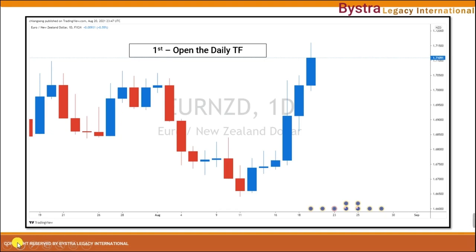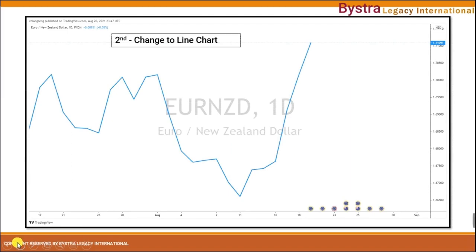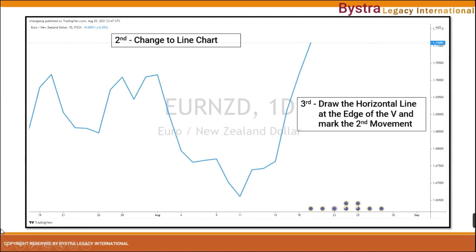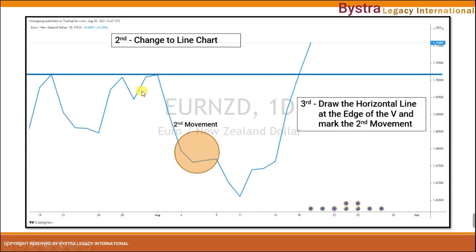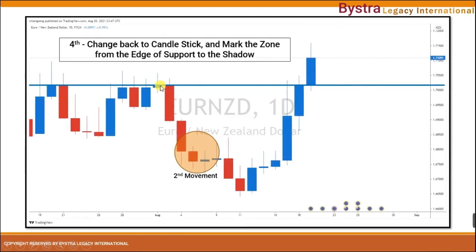So coming back here, we open on the daily time frame. Next, we go to the line chart. Third, we mark the horizontal line at the resistance. Then we mark the second movement of the horizontal line. Fourth, we go back to the candlestick chart and mark the zone from the edge of the resistance all the way up to the shadow.